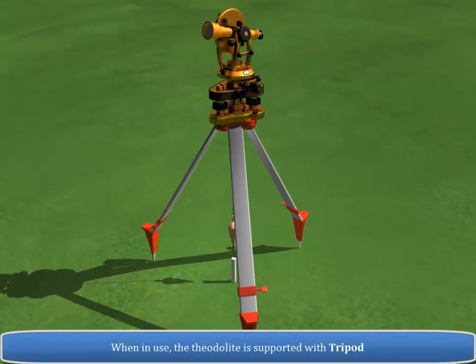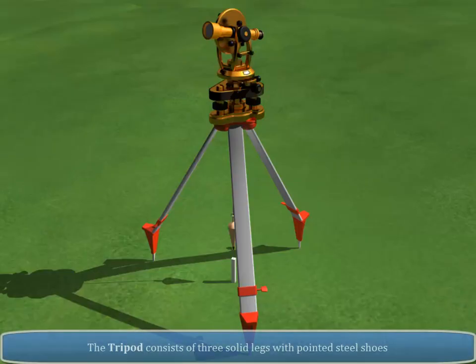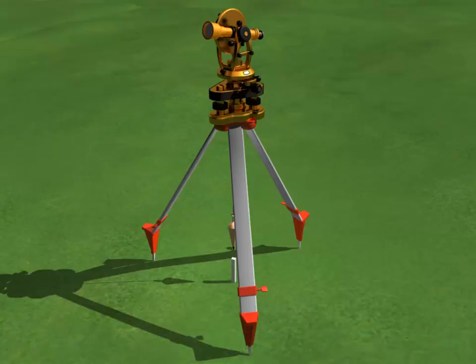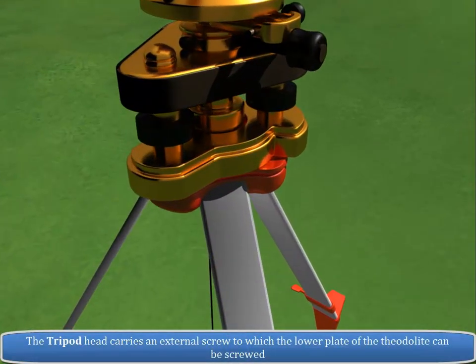When in use, the Theodolite is supported with tripod. The tripod consists of three solid legs screws with pointed steel shoes. The tripod head carries an external screw to which the lower plate of the Theodolite can be screwed.